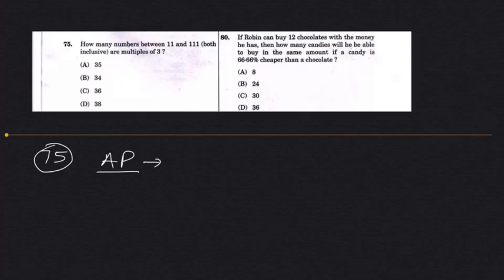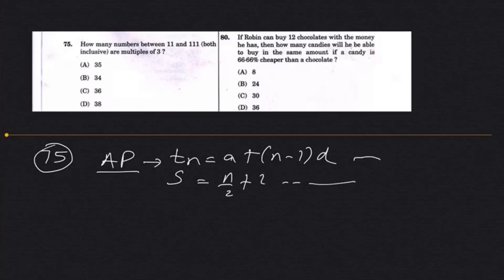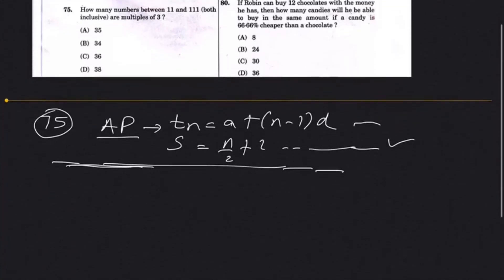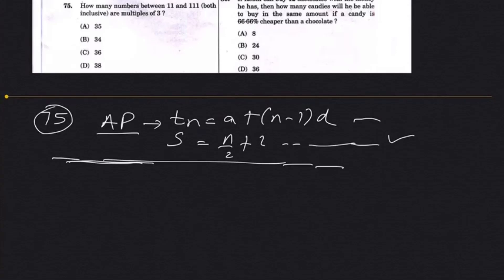Arithmetic progression — you know, TN equals A plus (N minus 1)d, and S equals N by 2 times 2A. This formula is good. It would be good if you solve through this formula, but what I want to stress here is: because this is an exam, you have only 2 hours to solve 200 questions. Out-of-the-box solutions are what will allow you to solve this question within a minute or a couple of minutes.